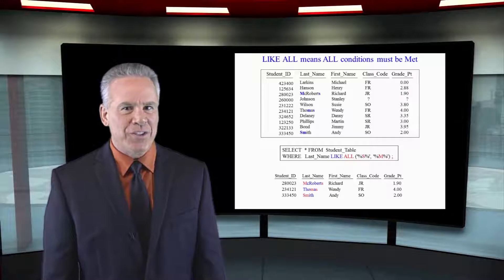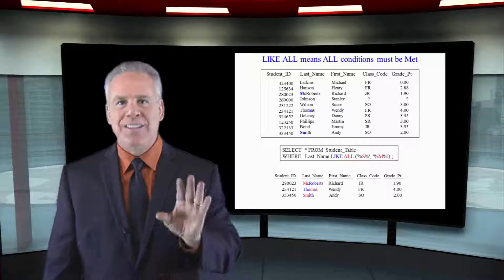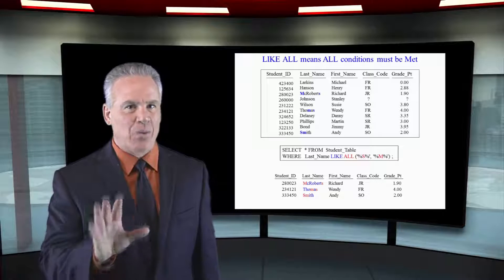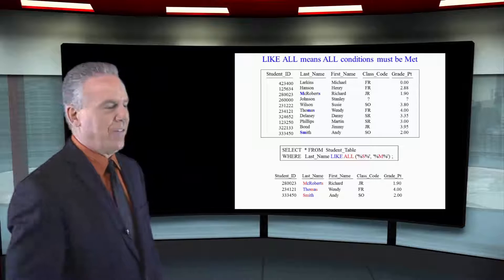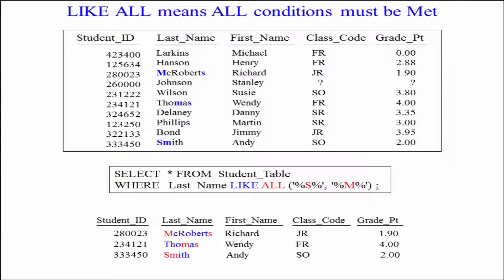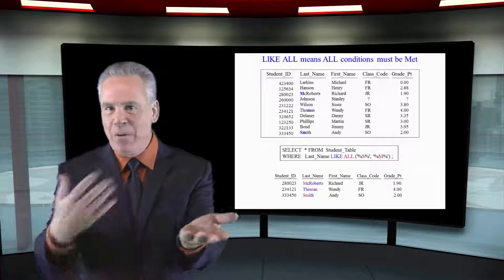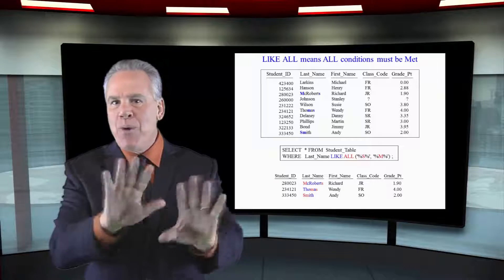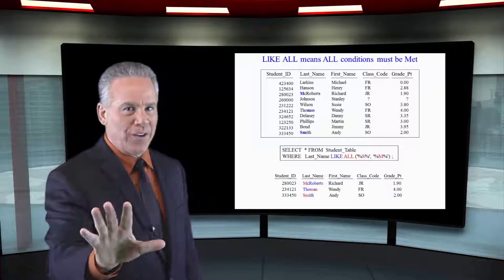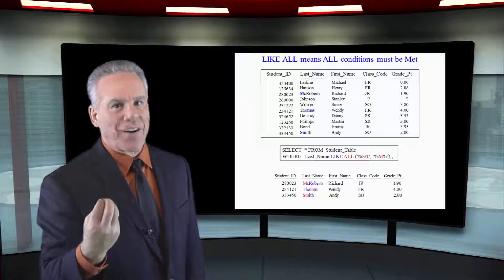Now you're seeing some SQL you probably haven't seen before. Now this is not ANSI standard, but it works on many of these databases. Take a look at this, where last name like ALL and then I've got my parentheses and I've got an M and an S in there followed by the wild card. So anybody whose last name has both an M and an S in it is coming back. And it doesn't have to be the M before the S. MS or SM, anywhere in the last name, if those two letters are in that last name, those rows are coming back.